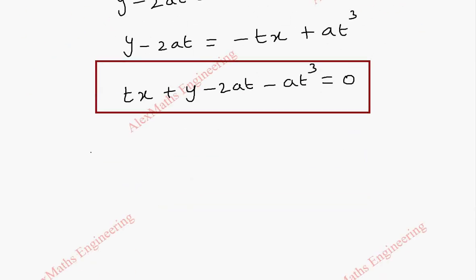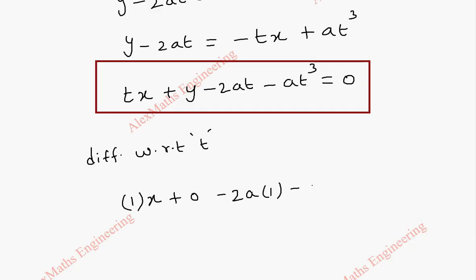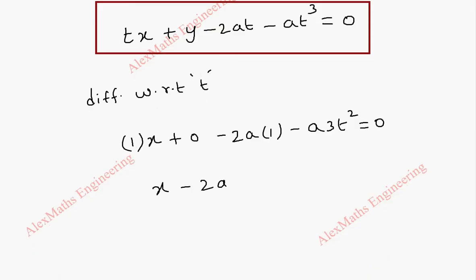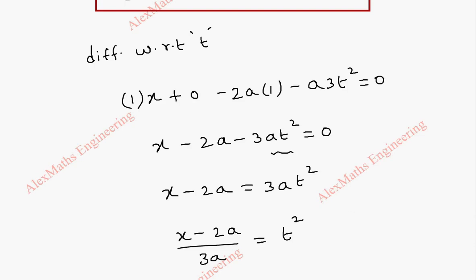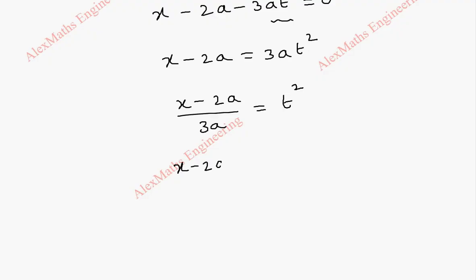Now we differentiate this equation of the normal with respect to t, treating x and y as constants. Differentiating tx + y − 2at − at³ = 0 gives x − 2a − 3at² = 0. From this, x − 2a = 3at², so t² = (x − 2a)/(3a), and therefore t = [(x − 2a)/(3a)]^(1/2).